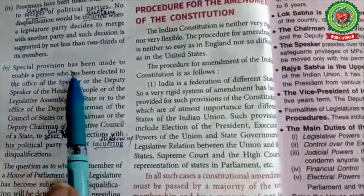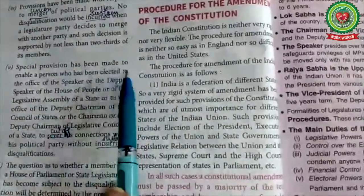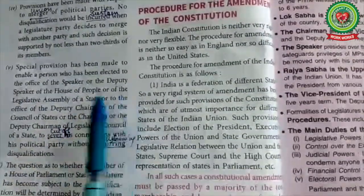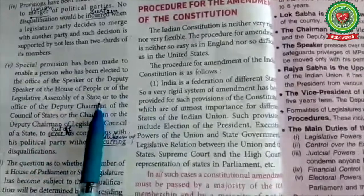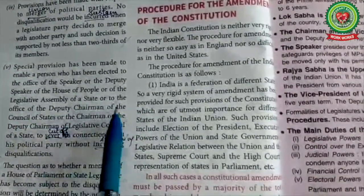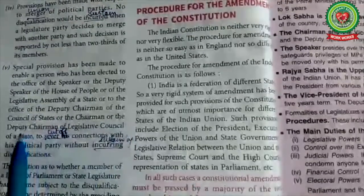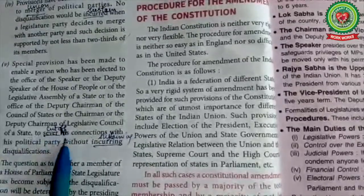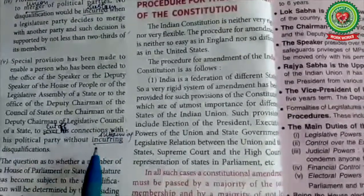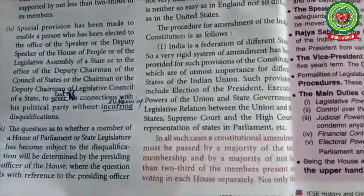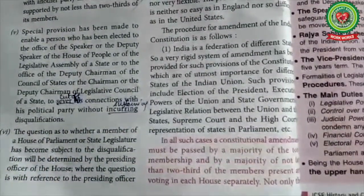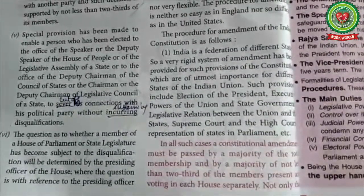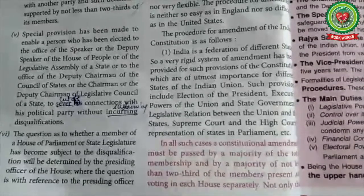Special provisions have been made to enable a person who has been elected to the office of the Speaker or the Deputy Speaker of the House of People, or of the legislative assembly of a state, or to the office of the Deputy Chairman of the Council of States, or the Chairman or the Deputy Chairman of the legislative council of a state, to sever — sever means cut off — his connections with his political party without incurring — means sustaining — disqualification. Any person elected as Chairman or Deputy Speaker can resign from his party if he resigns that post.